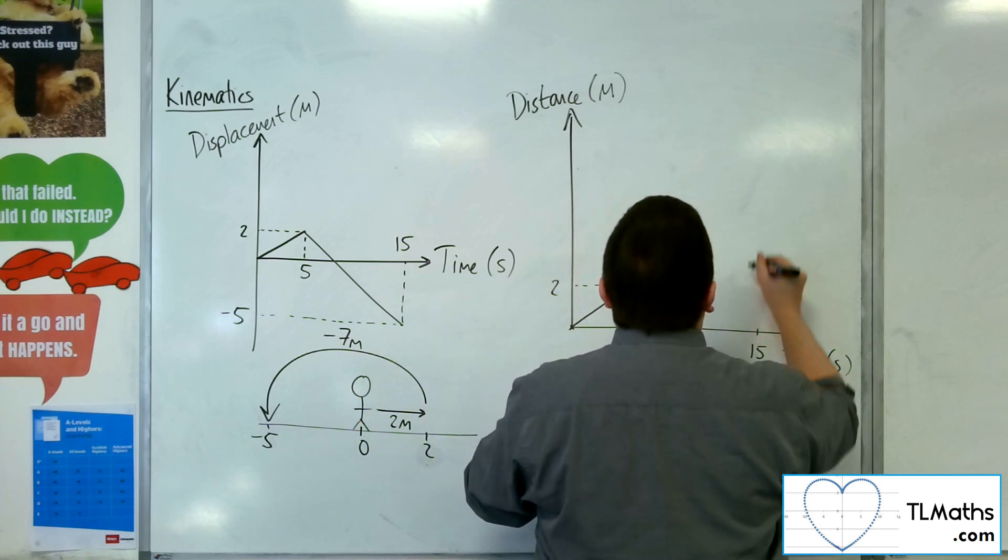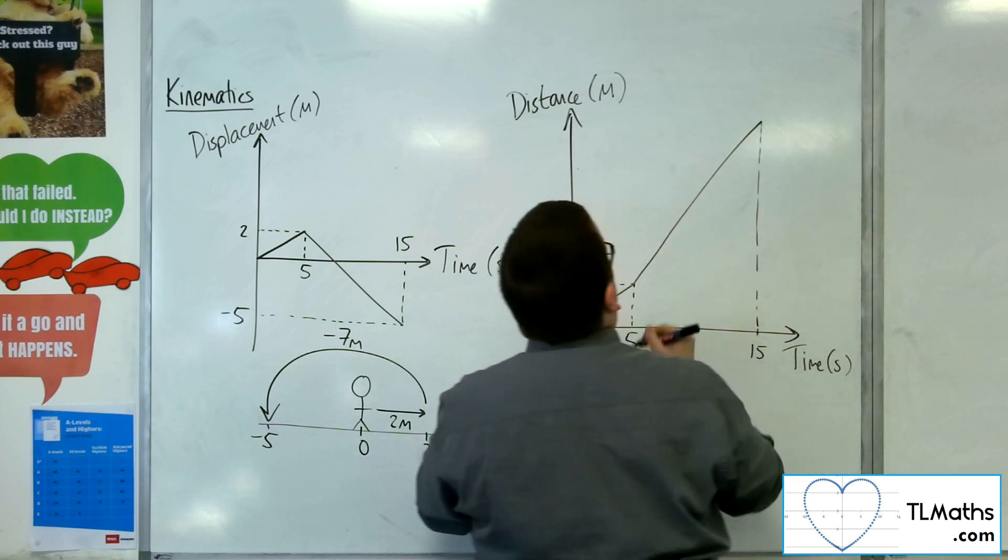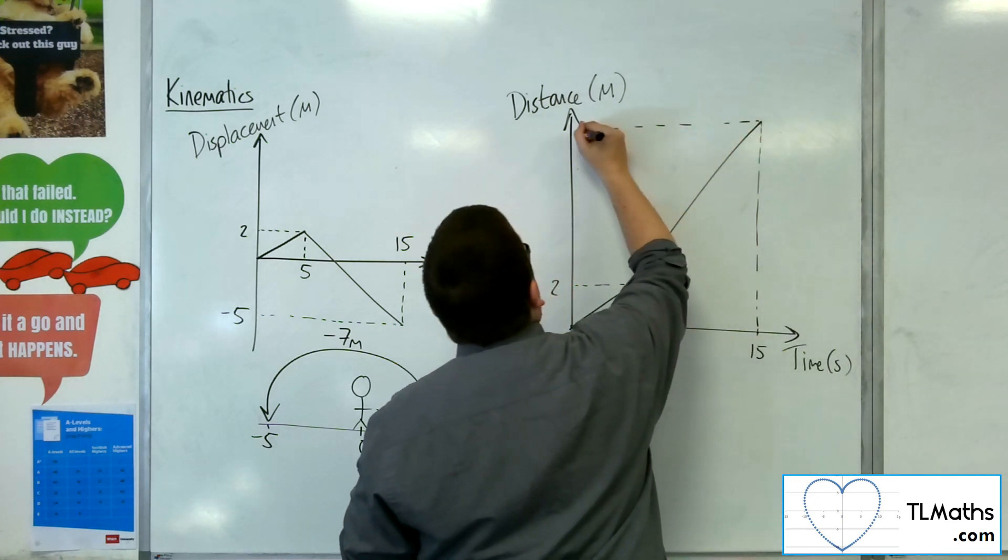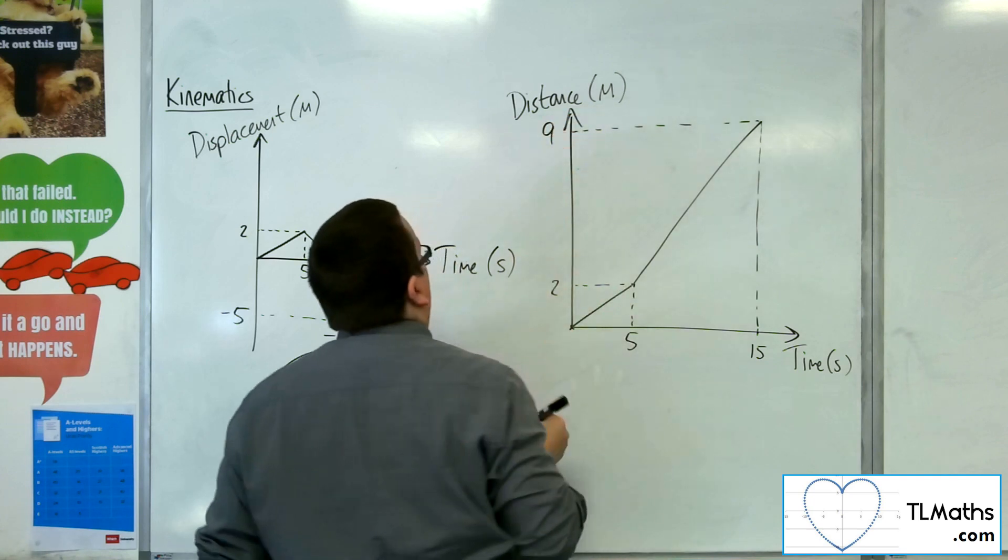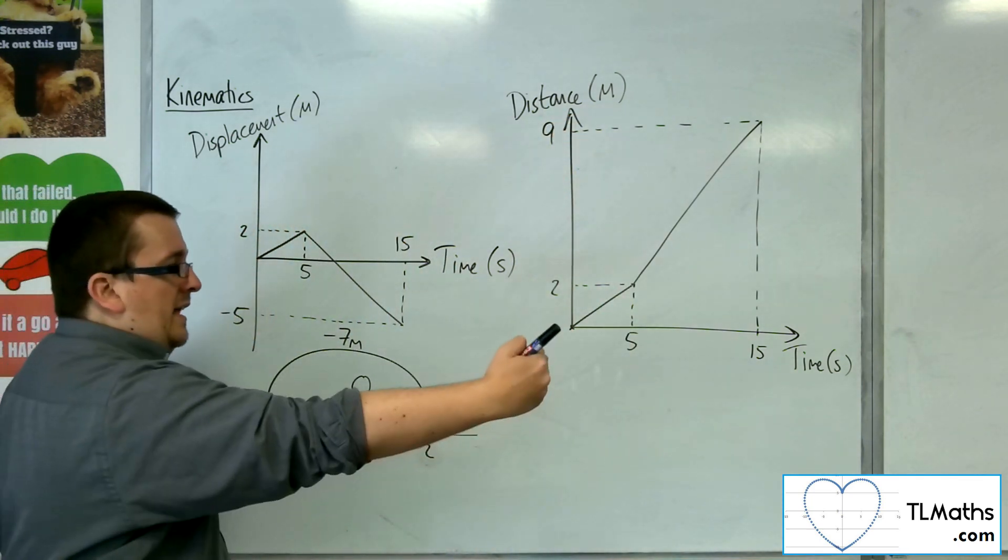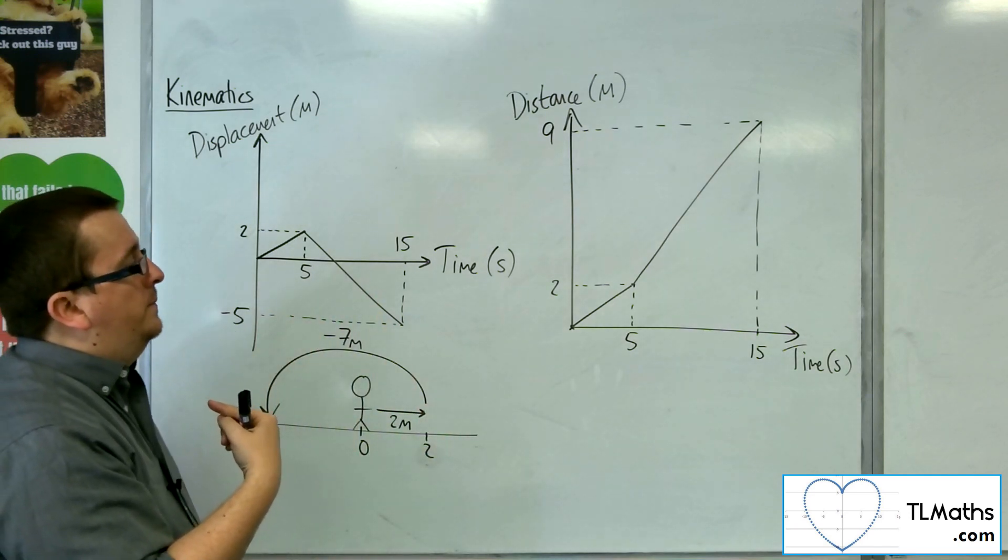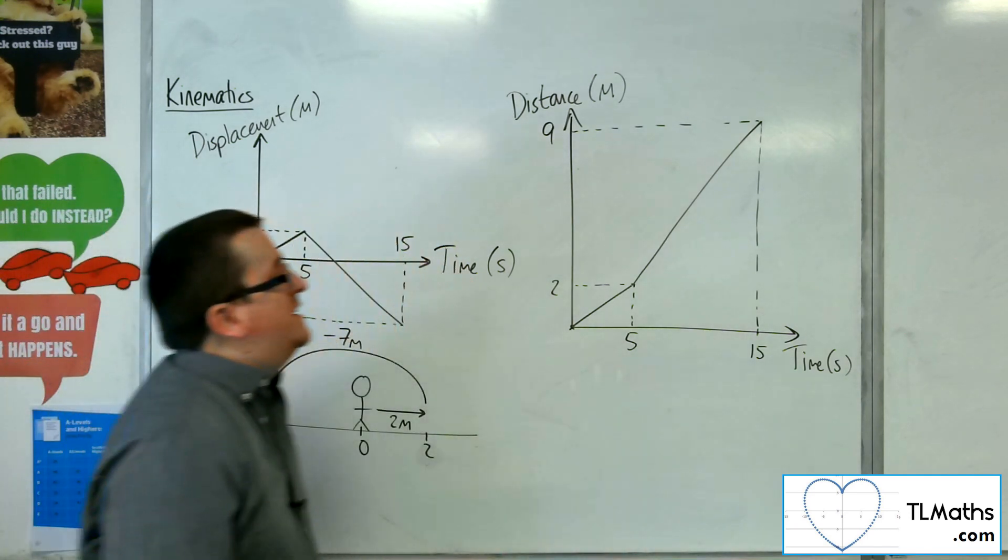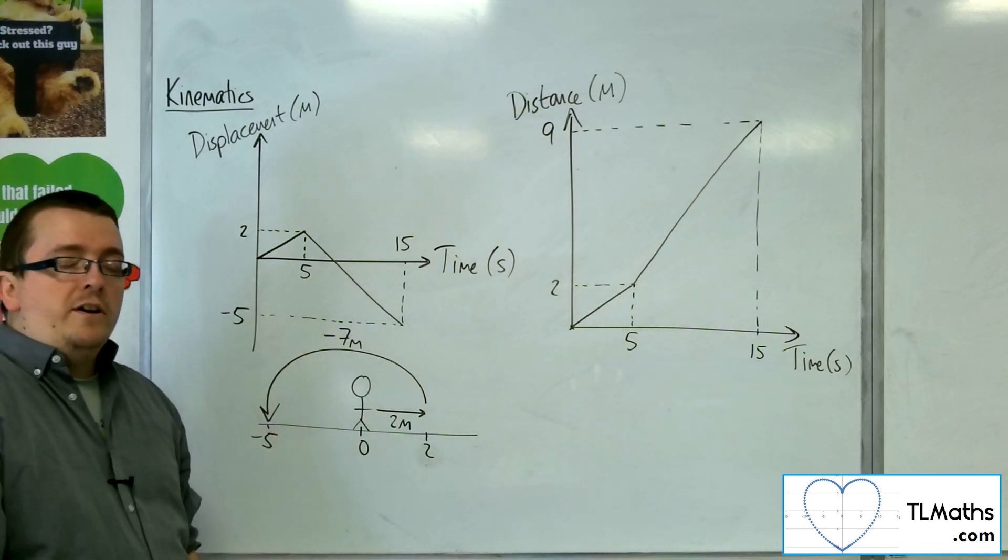So, we're going to be up here somewhere. So, in total, they have walked nine metres. Two metres there, seven metres back again. So, nine metres in total. And this is what their distance time graph would look like, as opposed to displacement time.